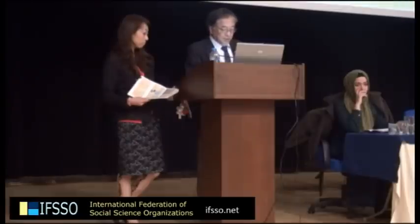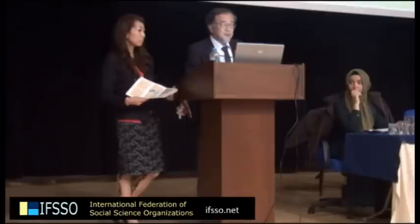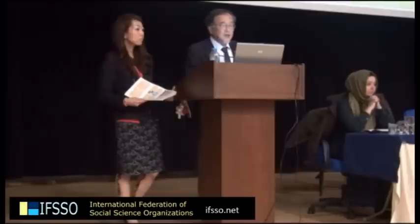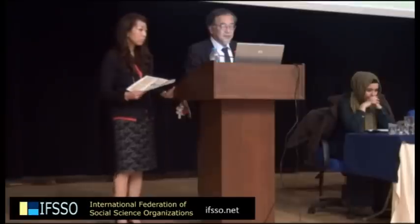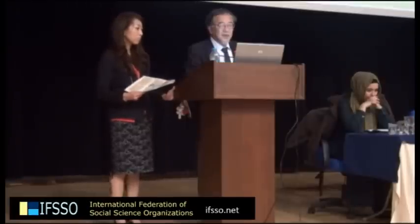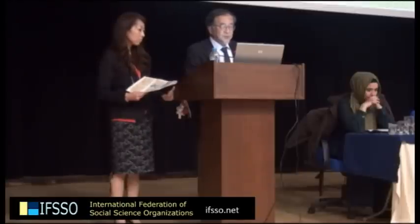Let me briefly check modern Japan. Modern Japan has started since 1868, and then the first Japanese immigrants left Japan to Hawaii and North America, after that to South America, such as Peru, Brazil, and Argentina. At the same time, some European people came to Japan.